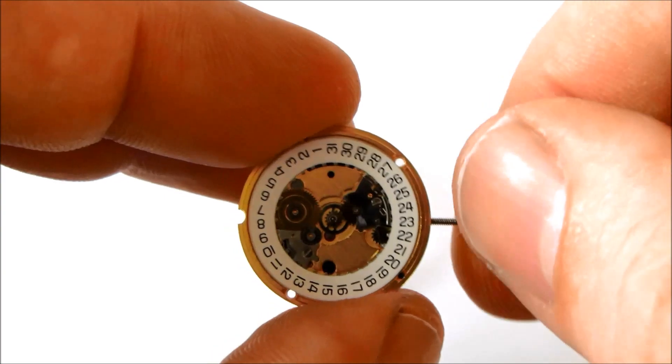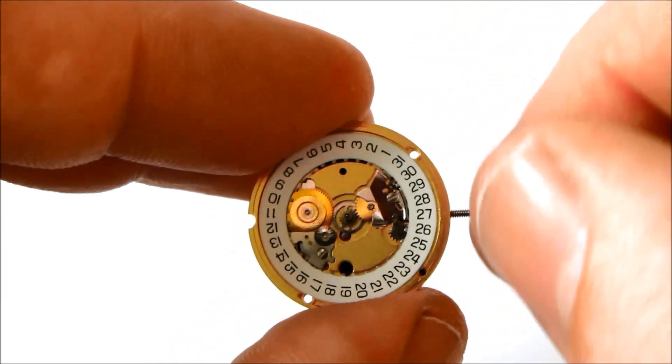And the battery end of life display, or EOL as it's known, will mean the second hand will start to jump as the battery nears the end of its life, so you'll know exactly when it does need a battery change.